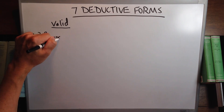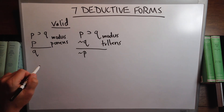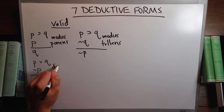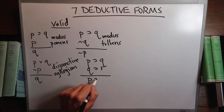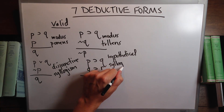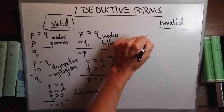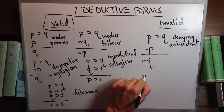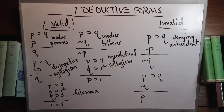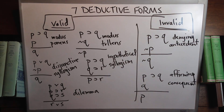Let's review. The valid forms are: (1) If P then Q; P; therefore Q — modus ponens. (2) If P then Q; not Q; therefore not P — modus tollens. (3) P or Q; not P; therefore Q — disjunctive syllogism. (4) If P then Q; if Q then R; therefore if P then R — hypothetical syllogism. (5) P or Q; if P then R; if Q then S; therefore R or S — dilemma. The invalid deductive forms are: if P then Q; not P; therefore not Q — denying the antecedent. And if P then Q; Q; therefore P — affirming the consequent. All seven are deductive forms: five valid, two invalid.